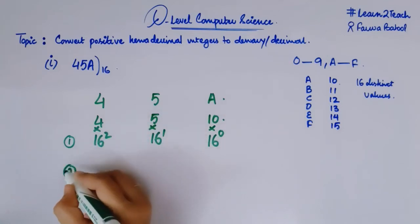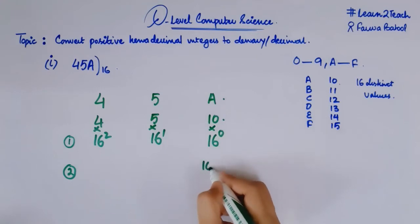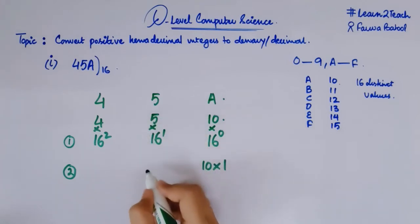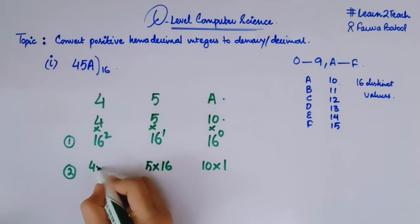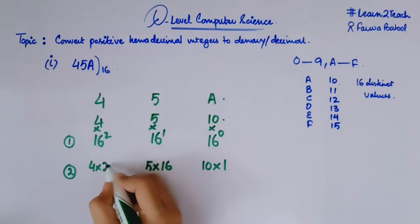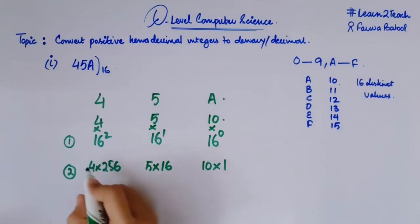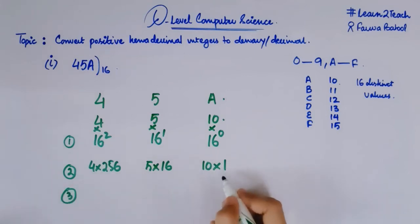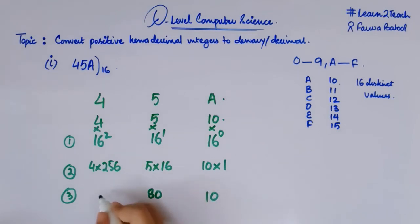So this is how we got these three terms. Now I am going to find the values of these multiplications. 10 into 1 is 10. 5 into 16 would be 80. And 4 into 256 would be 1024. Calculate by yourself so that you can be sure about it.